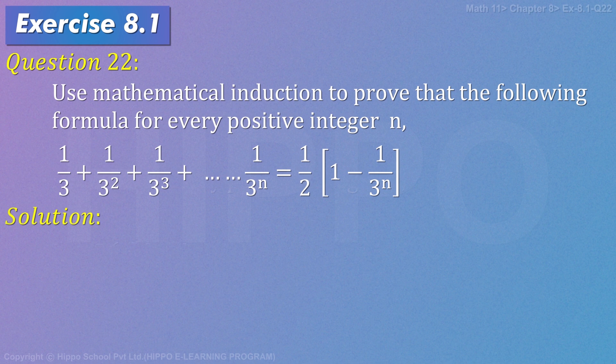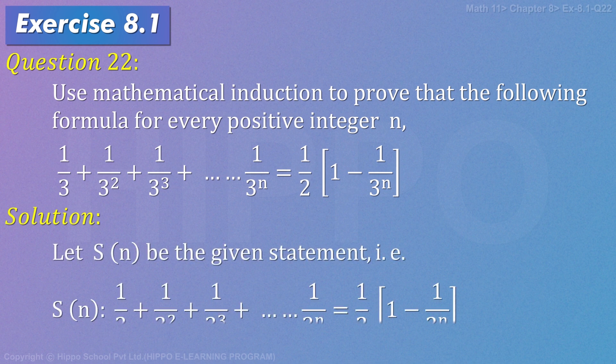Solution: We highlight S(n) as the given statement. S(n) is such that 1/3 + 1/3² + 1/3³ + ... + (1/3)ⁿ = (1/2)[1 - (1/3)ⁿ].